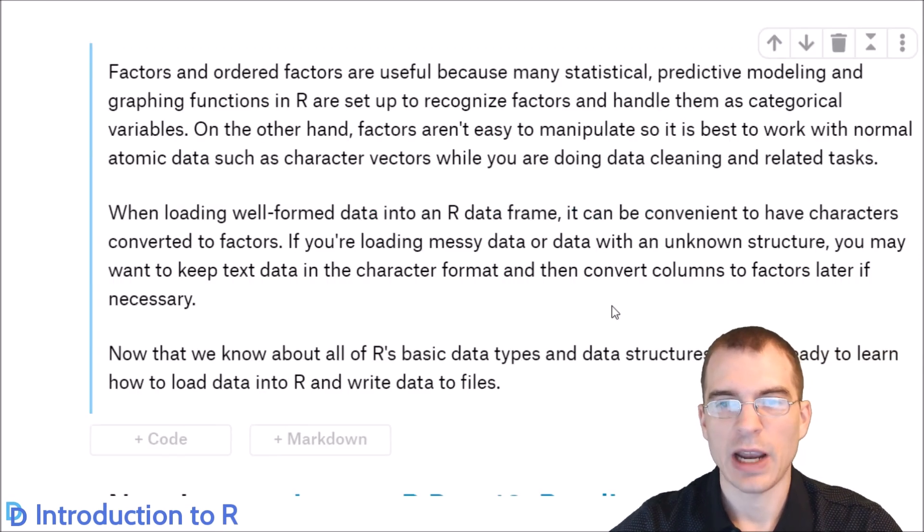Factors and ordered factors can be useful because many of the statistical predictive modeling and graphing operations in R are set up so that they recognize factors and then handle them as categorical data. But they're not super easy to manipulate by hand. So if you're trying to clean data, it's usually better to have all your data just as atomic data types, like character vectors, before you might later convert them into factors for doing other things.